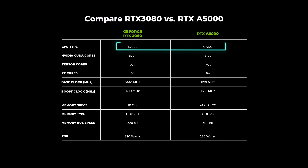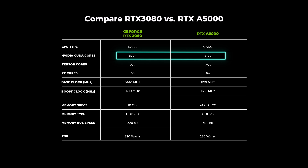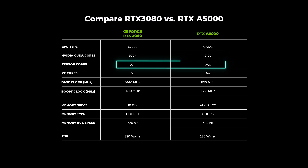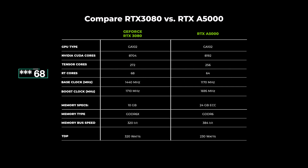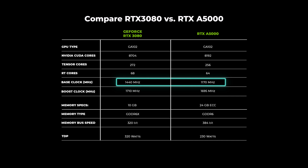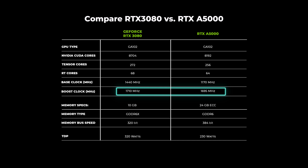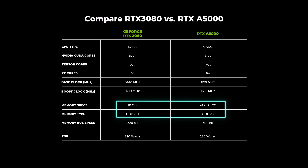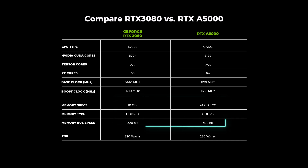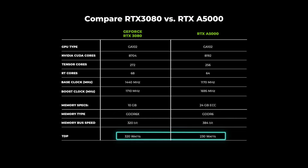Both the 3080 and the A5000 use the same processor — the GA102 die — but the 3080 has 8,704 CUDA cores versus 8,192 on the A5000. Tensor cores are 272 versus 256. RT cores are 86 versus 64. Base clock is 1,440 MHz for the 3080 and 1,170 MHz for the A5000, with boost clocks of 1,710 MHz versus 1,695 MHz. A major difference: the 3080 has 10 GB of GDDR6X while the A5000 has 24 GB of GDDR6 ECC memory. The memory bus is 320-bit on the 3080 versus 384-bit on the A5000. The 3080 uses 320 watts; the A5000 only uses 230 — quite a reduction in power.